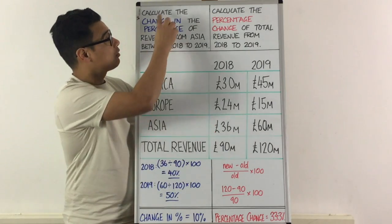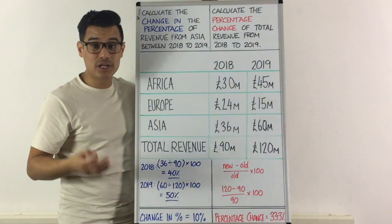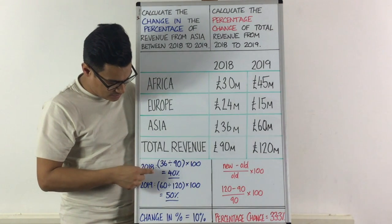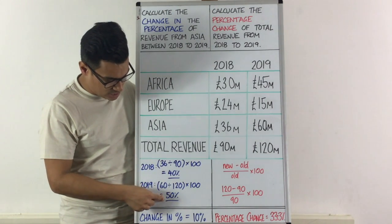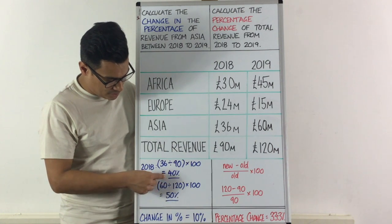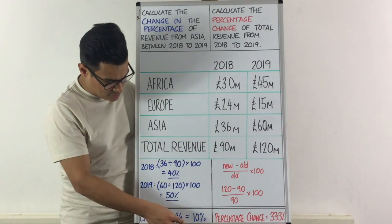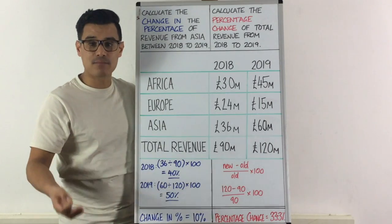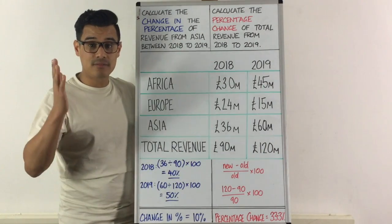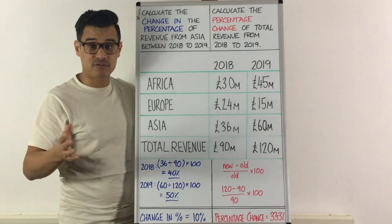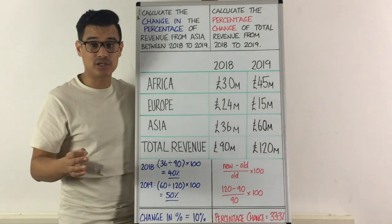The question says calculate the change in the percentage. Well, the change in the percentage is simply the difference between these two numbers, and you take 50 minus 40. So therefore, the change in the percentage is +10%. It's increased by 10%.